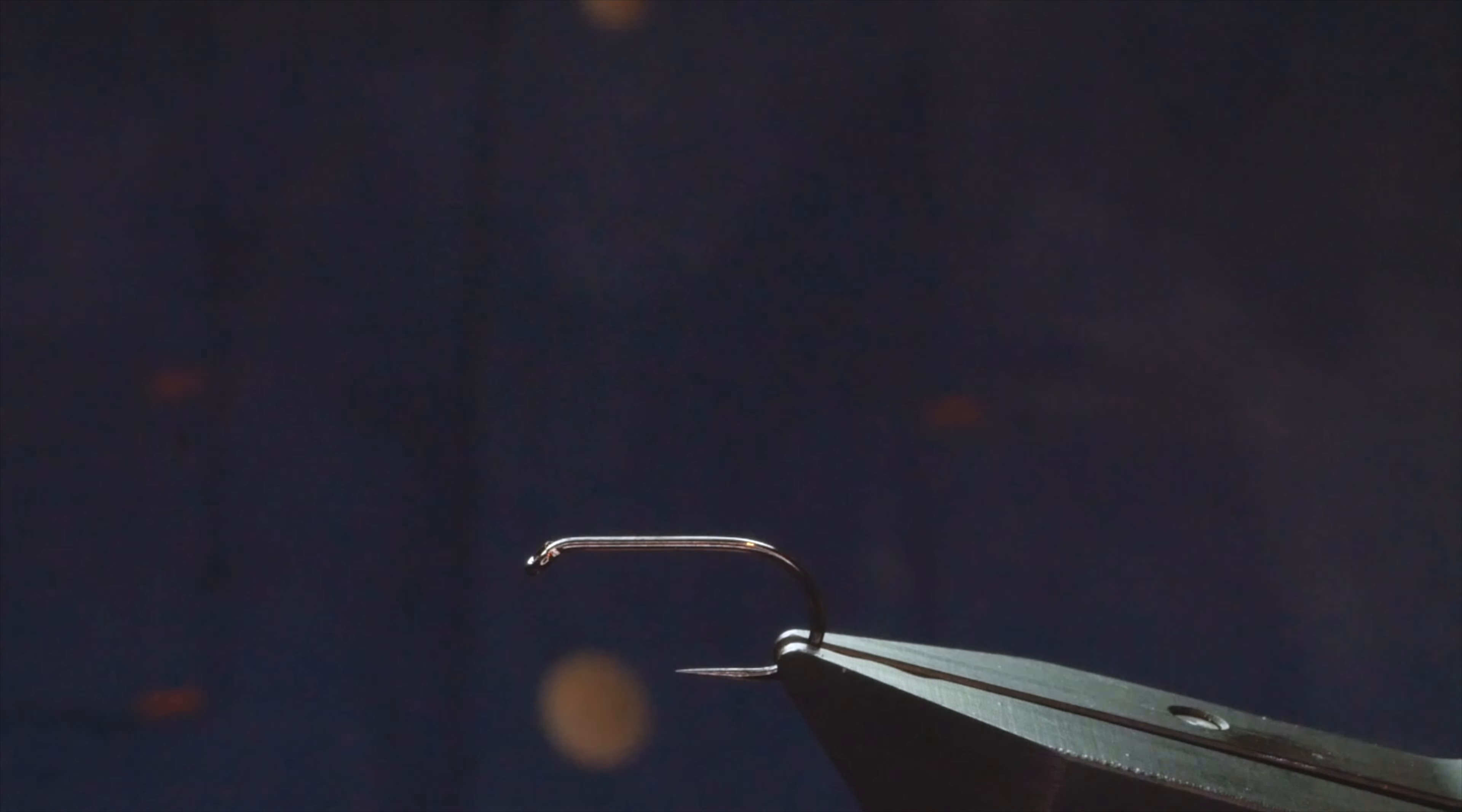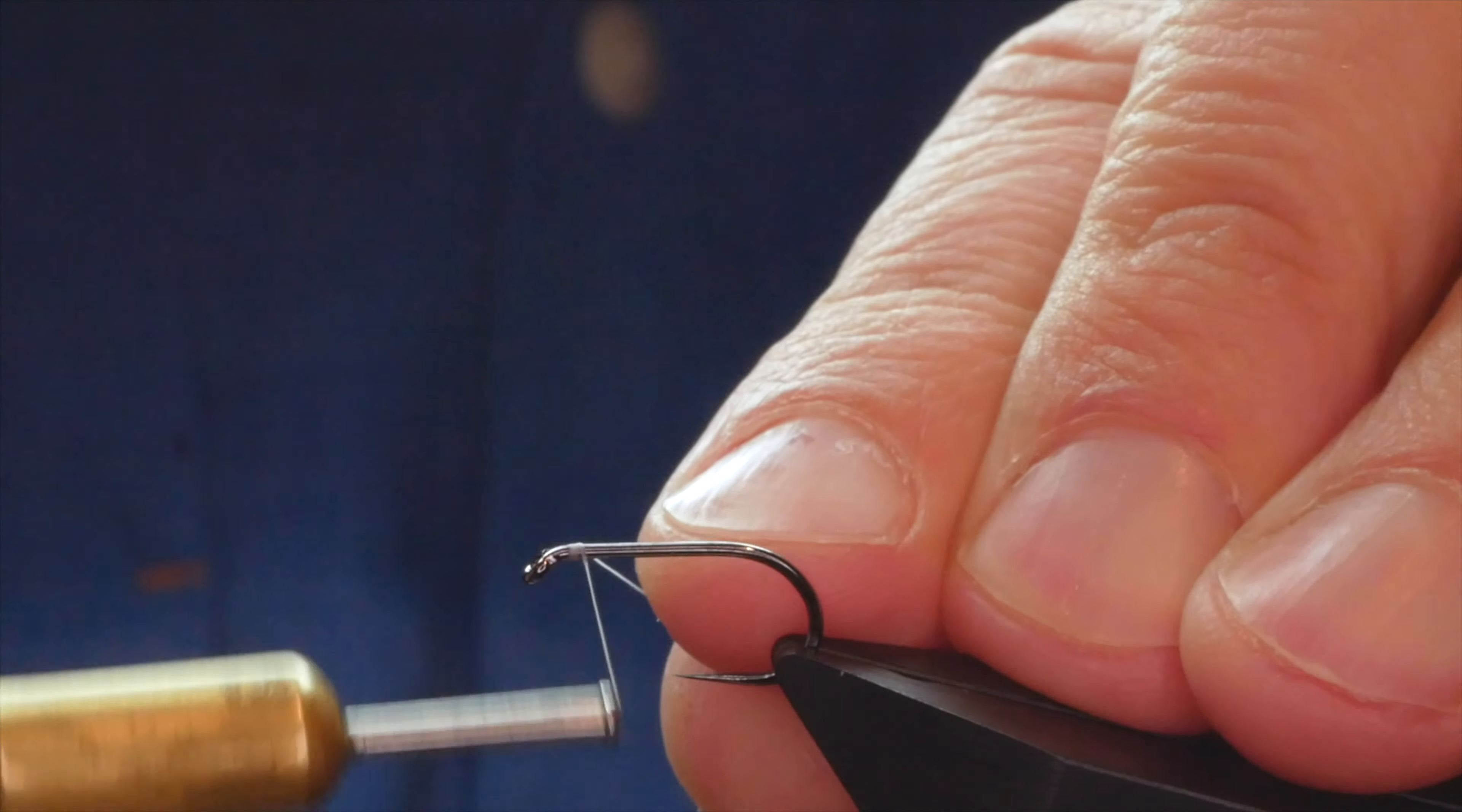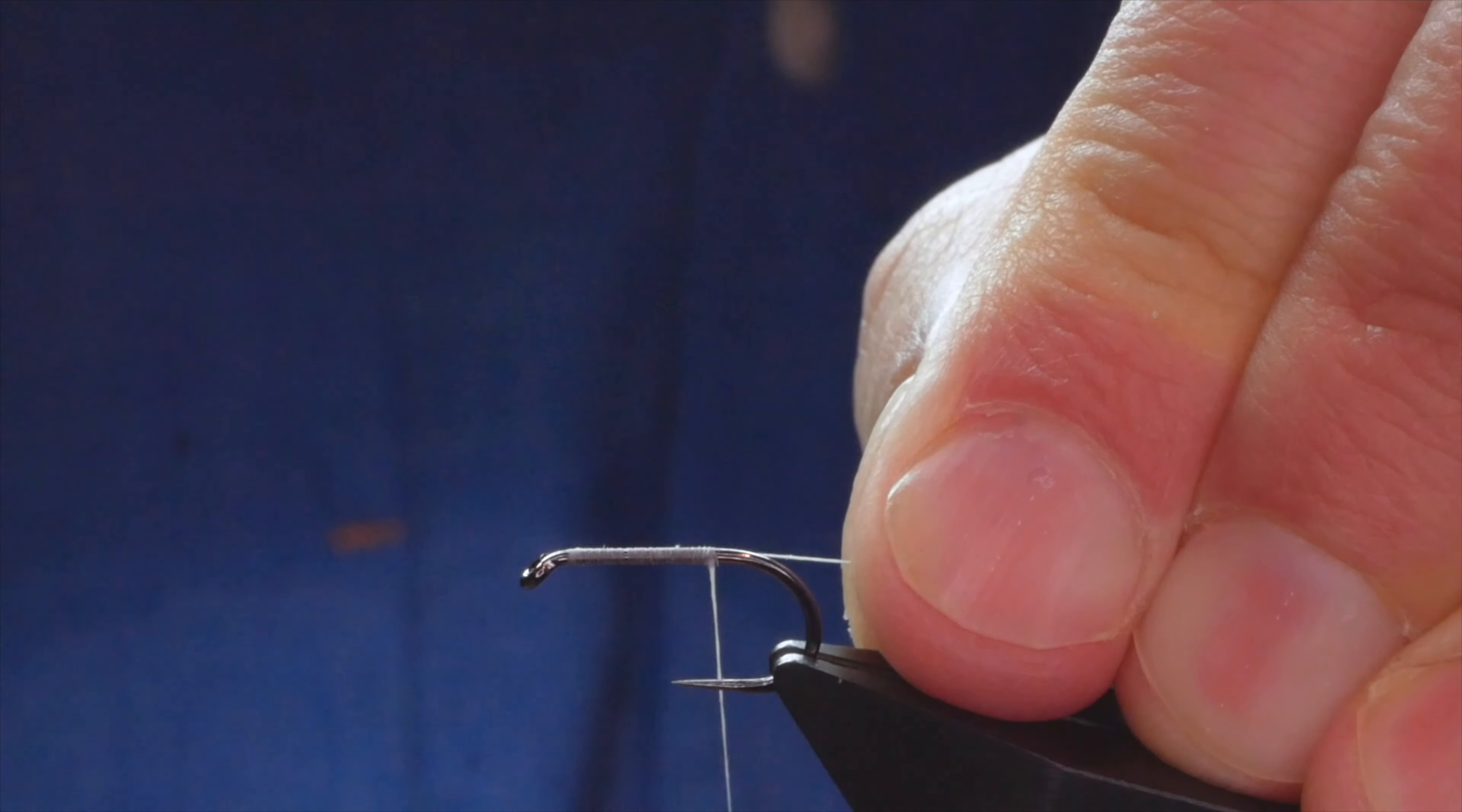First thing I want to do is add a little bit of wax onto my thread. It might seem a little thin for tying a lure but I need the thinness because I want to keep my body nice and slim. The other way I could have done it is with some nano silk, but because I'm tying a booby, if you're too heavy-handed with the nano silk, it just cuts right through your booby eyes.